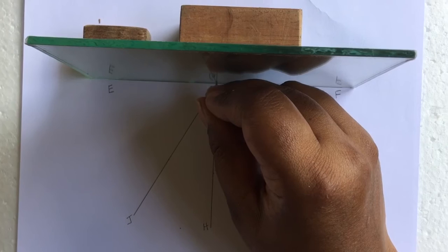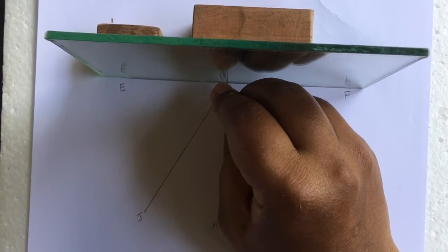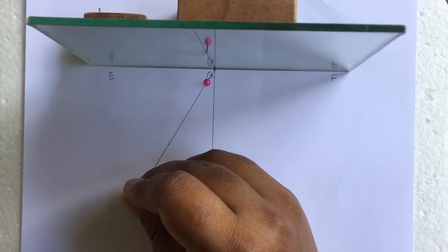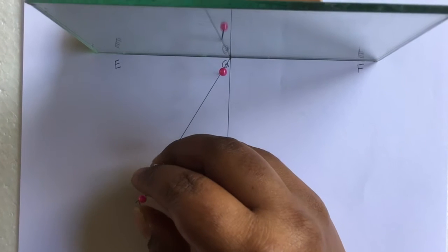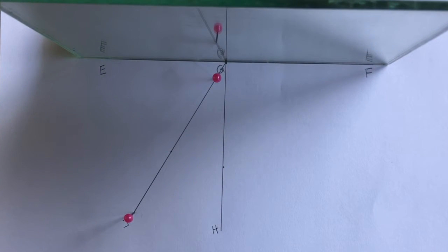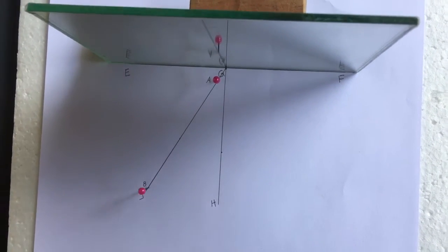Push a pin P1 into the surface at a point on GJ close to mirror. Push another pin P2 into the surface on GJ some distance from the mirror. Make sure the distance between these two pins are more than 5 cm. Label these two points as A and B respectively.